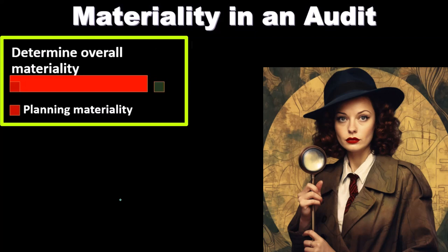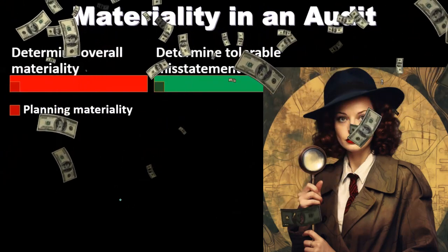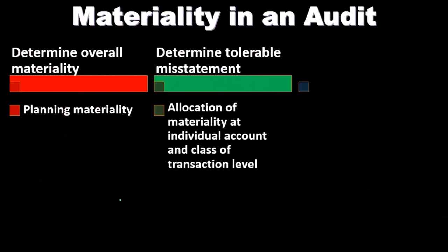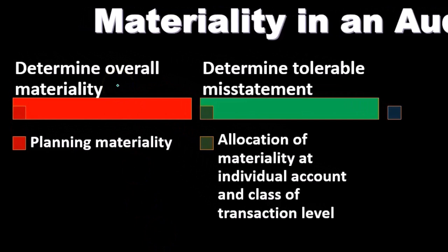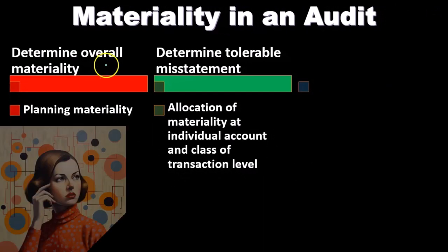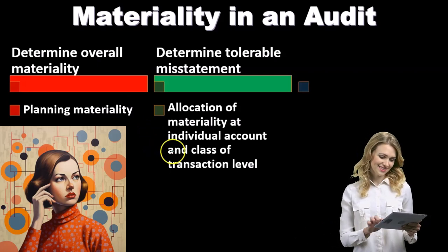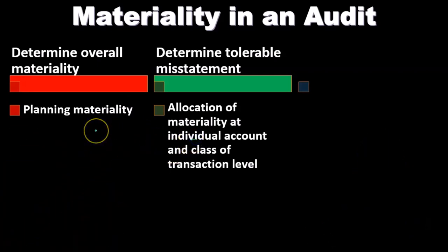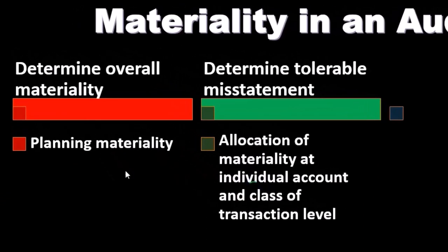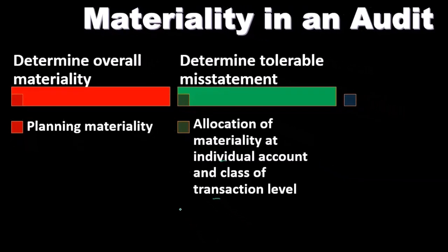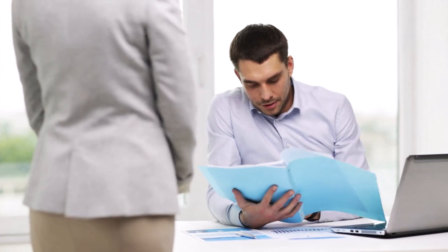We want to think about materiality as a whole on the total financial statements. Then we're going to determine the tolerable misstatement. The materiality level helps us think about how much misstatement would be okay — or under the threshold of a material misstatement. Once we have the materiality level, we determine tolerable misstatements by allocating materiality at individual account and class of transaction levels, getting down to a more granular level we can apply to actual audit processes.